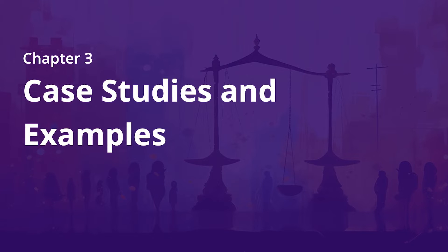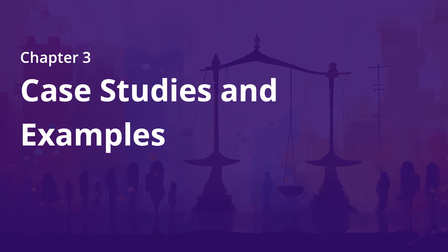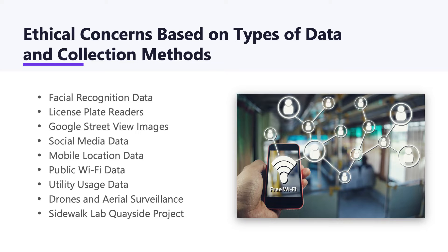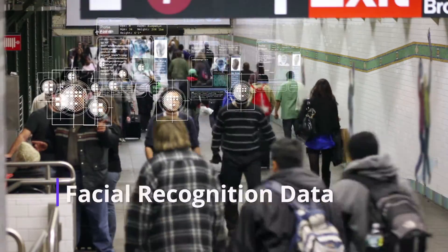This chapter will cover some specific examples of how AI is being used in planning. A lot of these relate to data collection methods that we're seeing more and more of today, because data is such an important element of artificial intelligence techniques and methods. The first is facial recognition data.